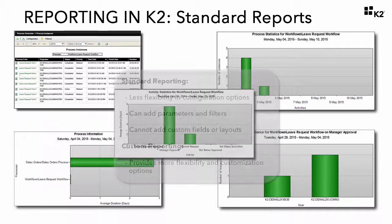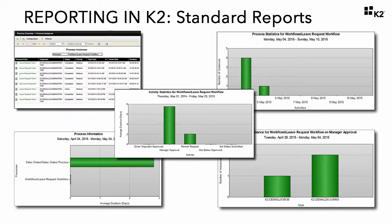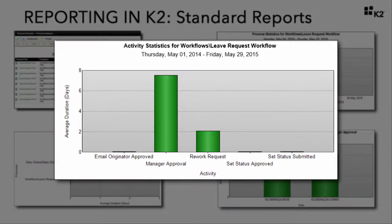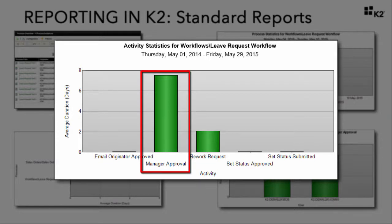Let's go through a brief overview of the five standard reports found in K2 workspace on the default page. The first report is the activity statistics report. This report is typically used to discover bottlenecks in a specific process or to identify which tasks have the most load in a workflow. In the example shown here, we are looking at the average time it takes for each activity or step within the leave request workflow process to complete. Notice how the manager approval activity consistently takes much longer to complete over the other three system tasks.